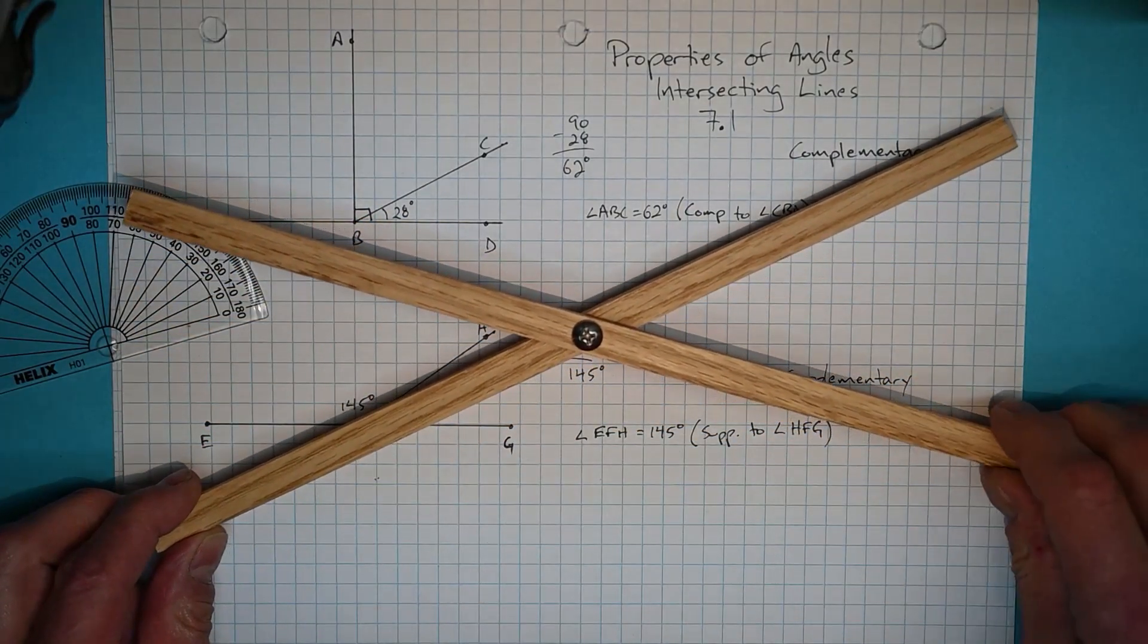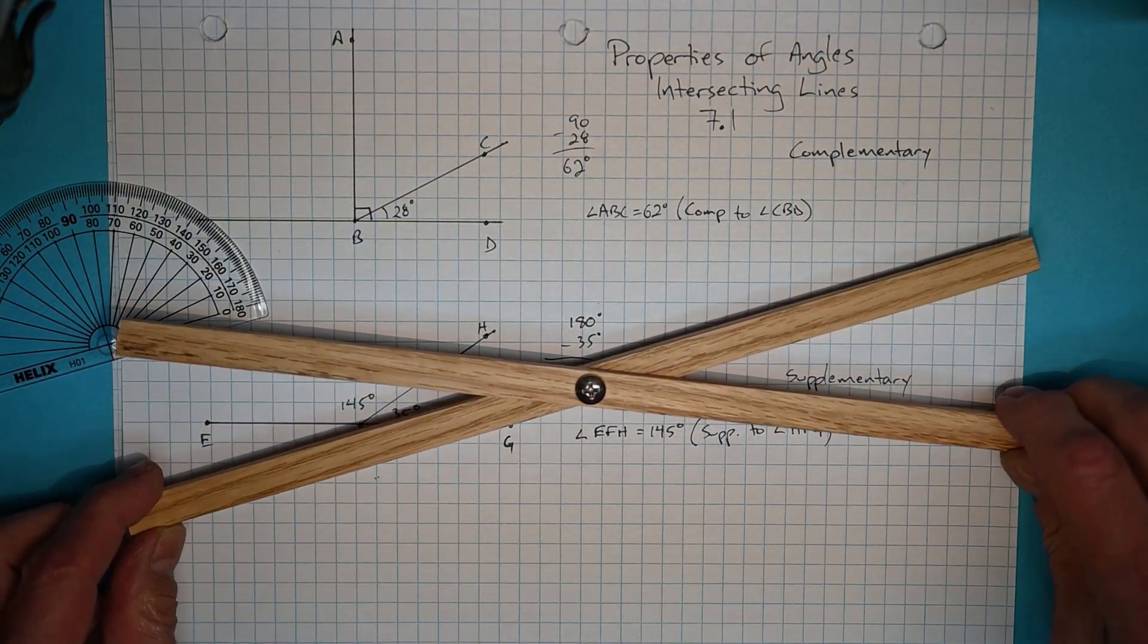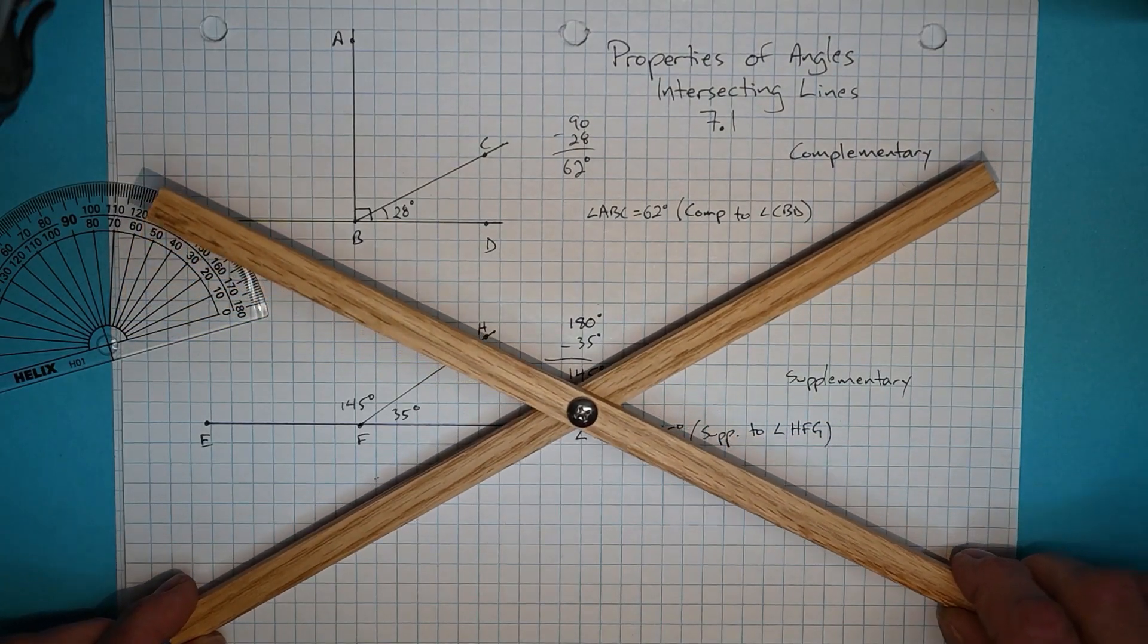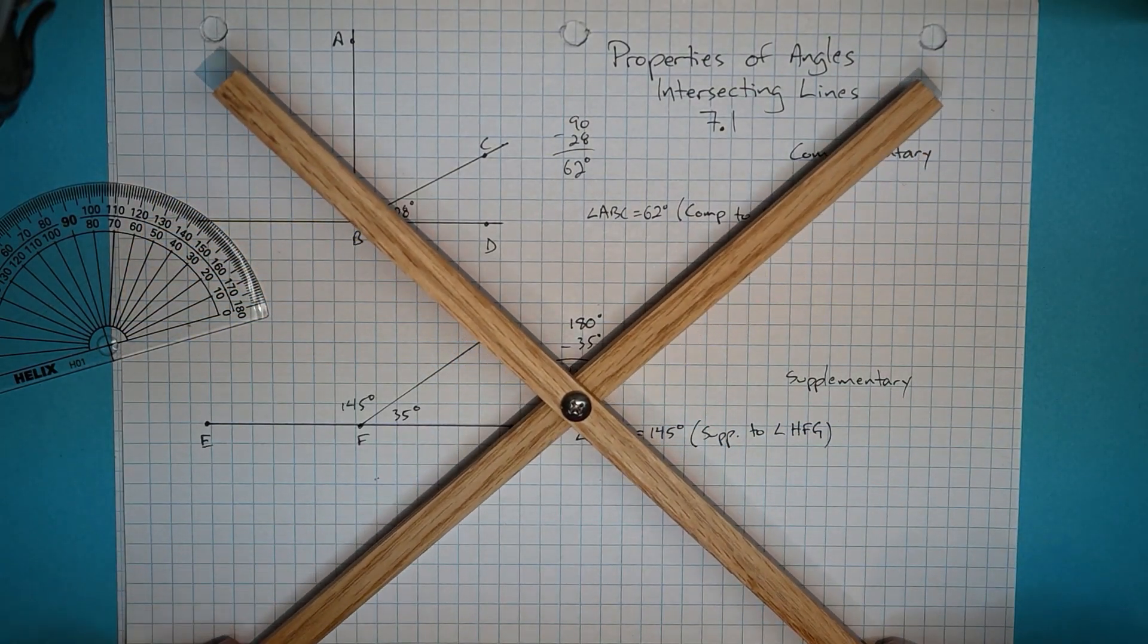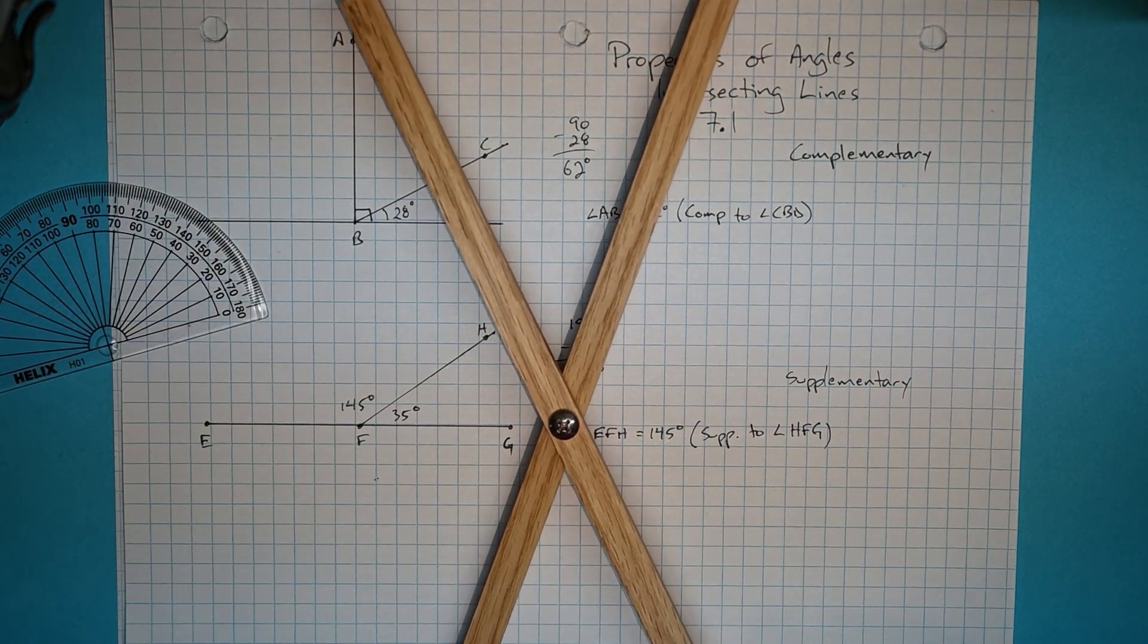And I want you to just look at the angles around this intersection of two lines. As I change it, you should notice a pattern or maybe some similarities and some differences here.